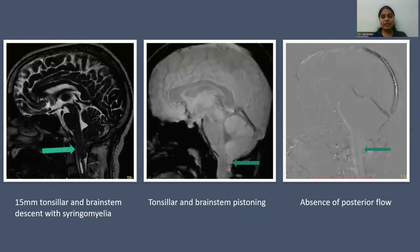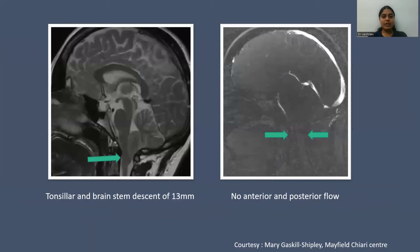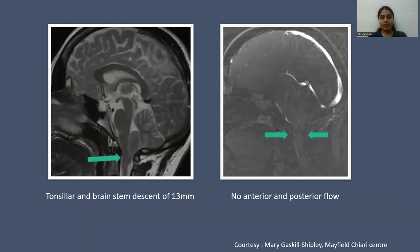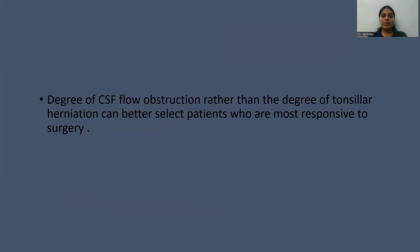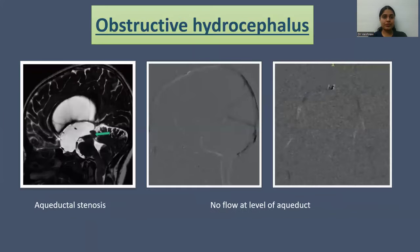In 15 mm tonsillar and brainstem descent with syringomyelia, tonsillar and brainstem pulsatile effect can be seen and there is absence of posterior flow. In tonsillar and brainstem descent of 13 mm, there is no anterior or posterior flow. Thus, the degree of CSF flow obstruction, rather than the degree of tonsillar herniation, can better select patients who are most responsive to surgery.